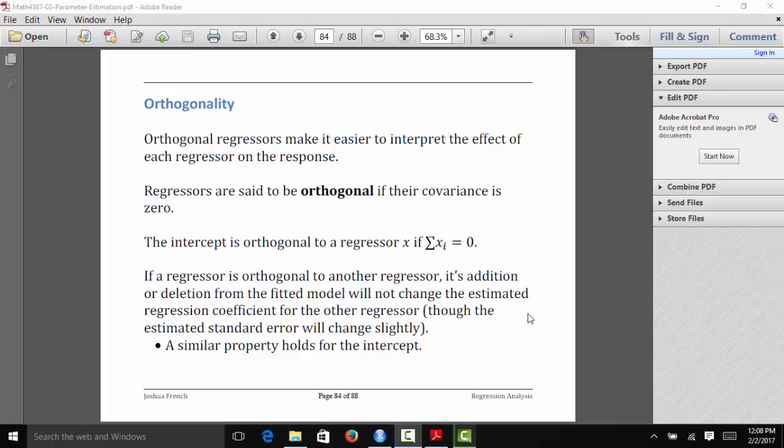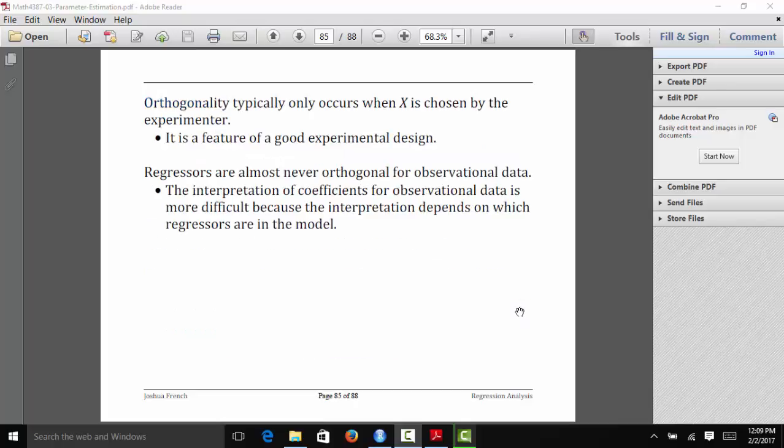In general, regressors are said to be orthogonal if their covariance is 0, and the intercept is orthogonal to a regressor if the sum of the elements of the regressor are equal to 0. If a regressor is orthogonal to another regressor, its addition or deletion from the fitted model will not change the estimated regression coefficients for any other regressor that's in the model. A similar property holds for the intercept.